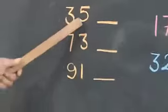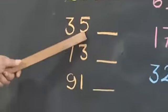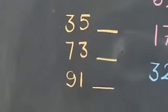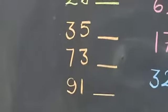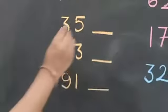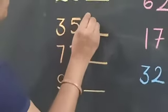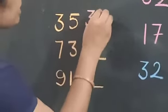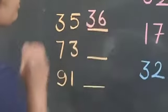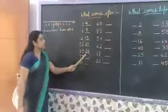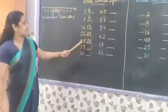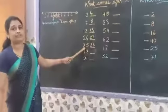And next number is 35. Which number is this? 35. What comes after 35? 3, 6 — that is 36. So 35 after is 36.